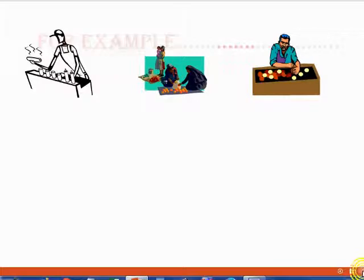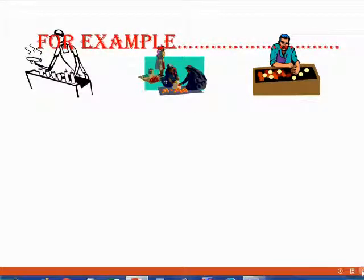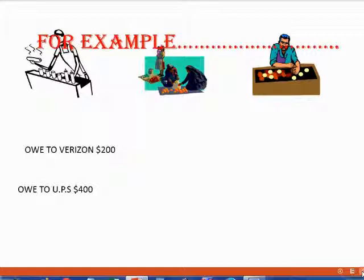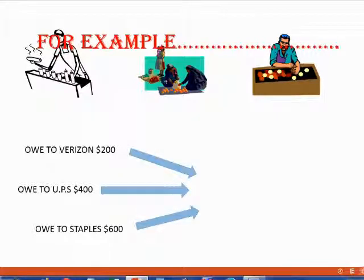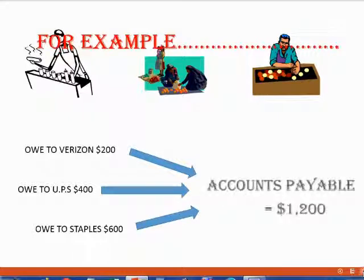For example, let us imagine that we owe to a vendor called Verizon $200. And at the same moment, we owe to another vendor called UPS $400. And at this very same moment, we owe to a third vendor named Staples $600. Well, if that's the case, that means that the general ledger account Accounts Payable in the chart of accounts should have a balance of $1,200.